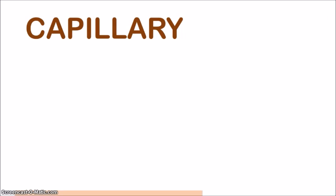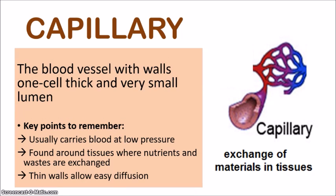Let's look at the final blood vessel, the capillary. The capillary is the smallest of the three blood vessels, and its walls are made up of one cell only — very thin walls — and they have a very small lumen. Key points to remember: capillaries carry blood under low pressure and are found around tissues where nutrients and wastes are exchanged. Because they need to exchange nutrients at the tissues, the walls have to be very thin, allowing for easy diffusion of materials.